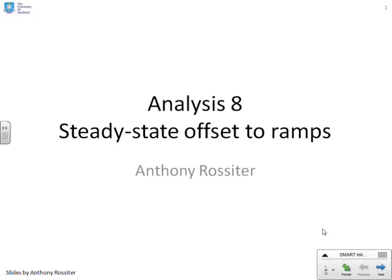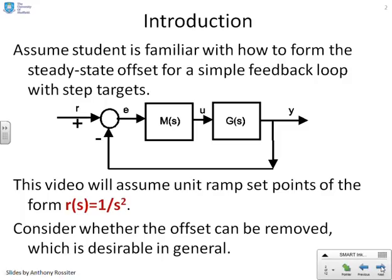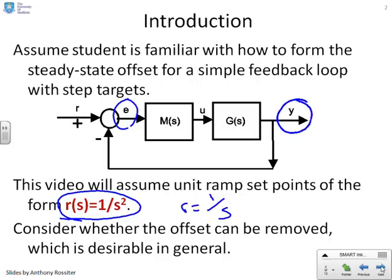This video concentrates on the theme of steady state offsets, but looks at situations where the target is a ramp. We assume students are familiar with how to form steady state offsets for simple feedback loops. The only difference from earlier videos is that now we assume r equals 1 over s squared, whereas previous videos used r equals 1 over s. We will ask: can the offset still be removed, and can this error signal still go to zero when r is a ramp?